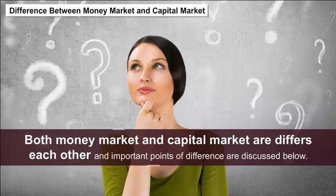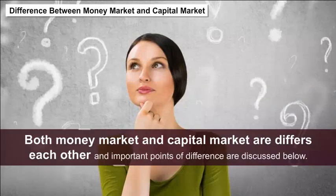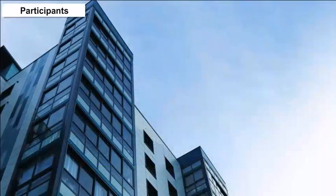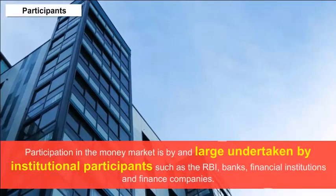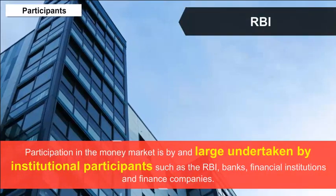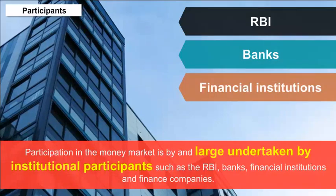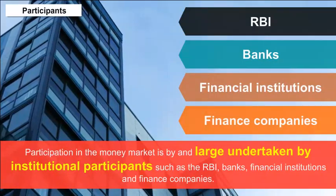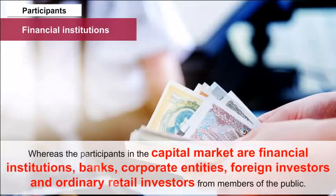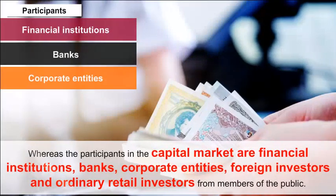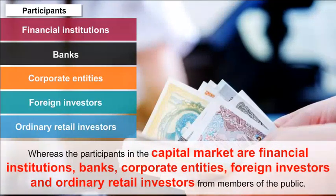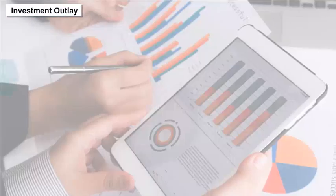Differences between money market and capital market: Participants — participation in the money market is largely undertaken by institutional participants such as the RBI, banks, financial institutions, and finance companies. Whereas participants in the capital market are financial institutions, banks, corporate entities, foreign investors, and other retail investors from the general public.